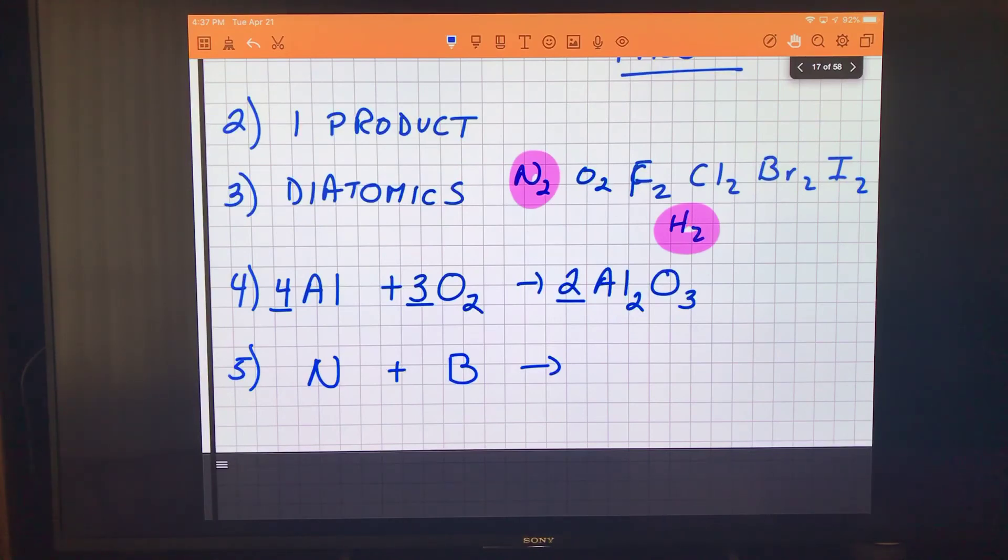Now it does make a difference which one comes first. Boron is furthest to the left so it's going to be boron and then the N. Now I have to go back, I have to look for diatomics. Nitrogen over here on the left side, yep, that guy traveling by itself, it's diatomic, I've got to have a two right there. Boron traveling by itself but it's not diatomic.